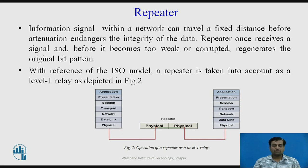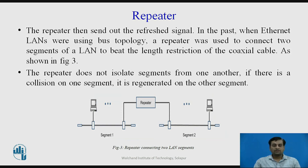Data signals within a network can travel a fixed distance before attenuation alters the integrity of the data. The repeater receives the signal and regenerates it before it becomes too weak or corrupted. With reference to the OSI model, the repeater works at the physical layer and acts as a level-one relay, as shown in this figure. The repeater sends out a refreshed, regenerated signal.